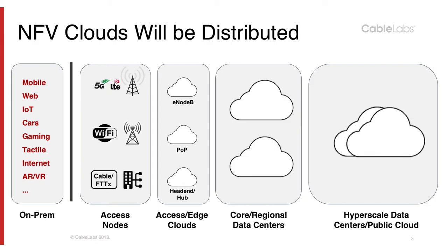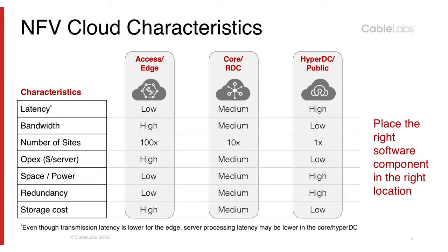Then you have core clouds or regional data centers, and at the far right you have hyperscale data centers or public clouds. The far left also shows on-prem applications ranging from mobile, web, IoT, autonomous cars, gaming, tactile internet, augmented reality, and virtual reality — and in some cases these may be considered a cloud as well. For example, virtual customer premise equipment may be a small cloud where applications can be dynamically spun up and spun down. We will look at edge, core/regional, and hyperscale environments, and you can easily extrapolate the attributes of on-prem from those.